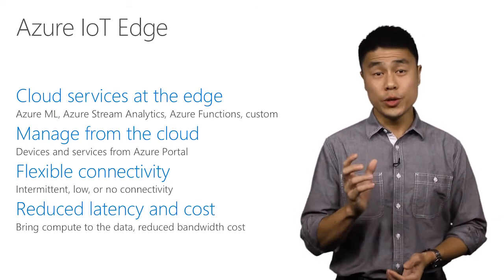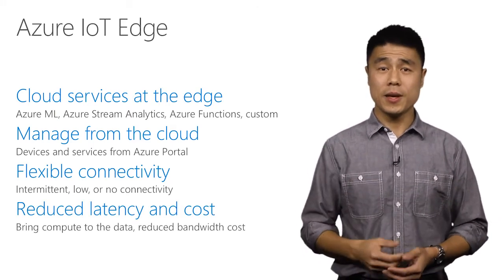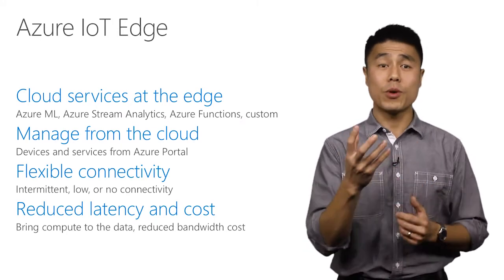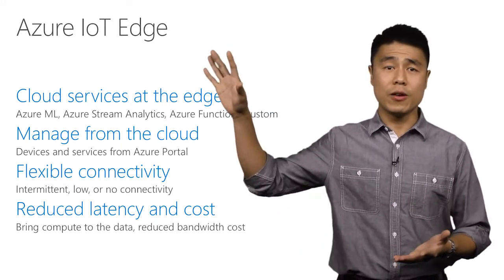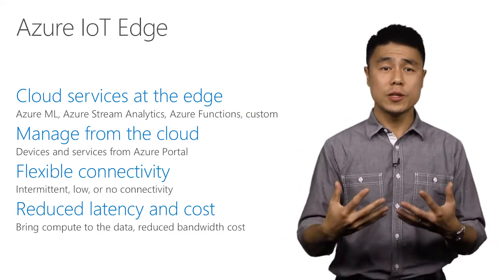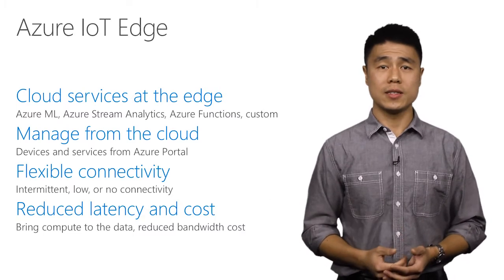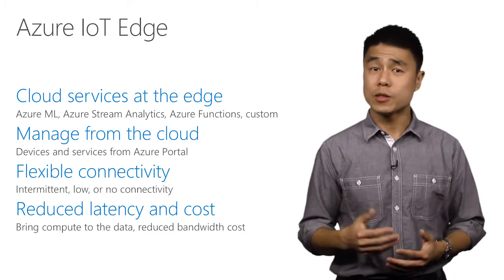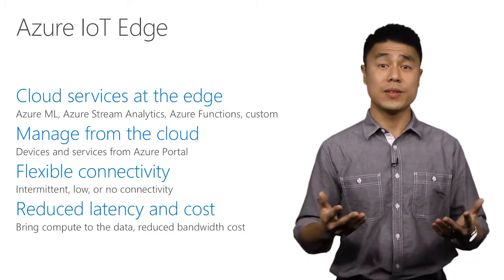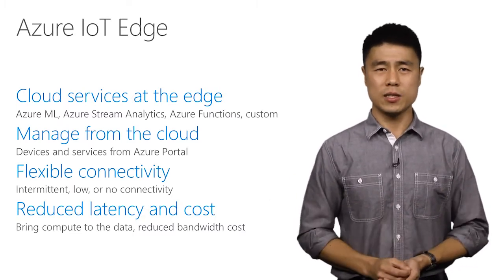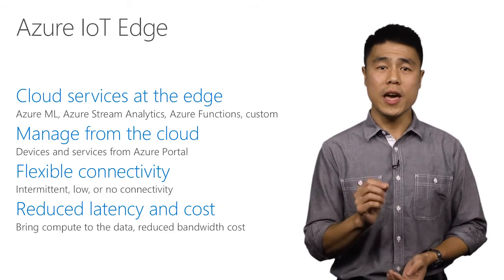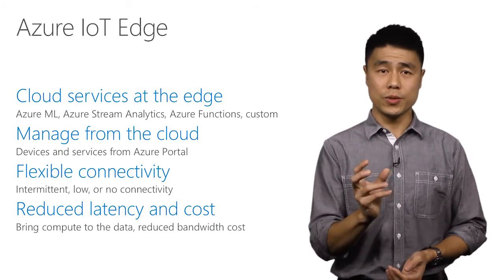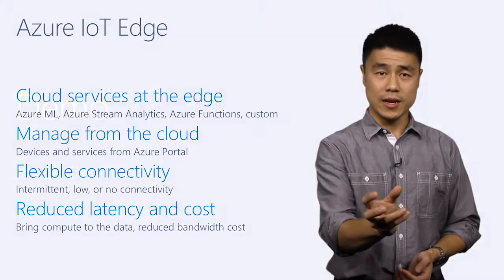There is reduced latency because compute is brought to the data. The data doesn't need to travel to the cloud, which reduces bandwidth costs. If your data is private, sensitive, or impossible to send to the cloud, IoT Edge brings compute to the data.